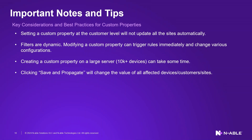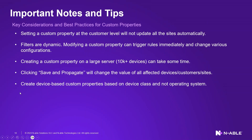Clicking 'Save and Propagate' will change the value on all affected devices, customers, and sites. A lot of people misuse that button — 'all my custom properties are blank now,' because they saved and propagated and overwrote everything. Be very careful with Save and Propagate. Also, create device-based custom properties based on device class rather than operating system — device class is way easier and faster.